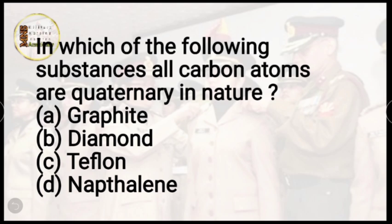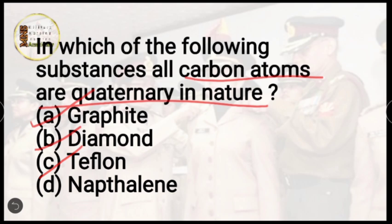Question number 20: in which of the following substances are all carbon atoms quaternary in nature? Options are graphite, diamond, teflon, or naphthalene. The correct answer is option B, diamond. In diamond, all carbon atoms form four covalent bonds and create a tetrahedral structure, making them quaternary in nature.